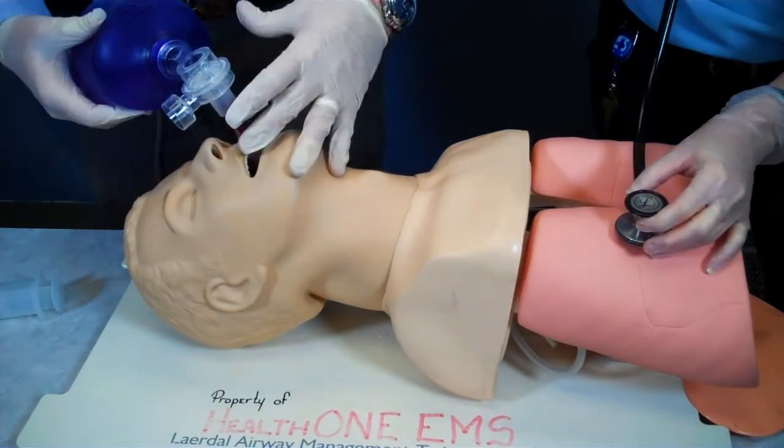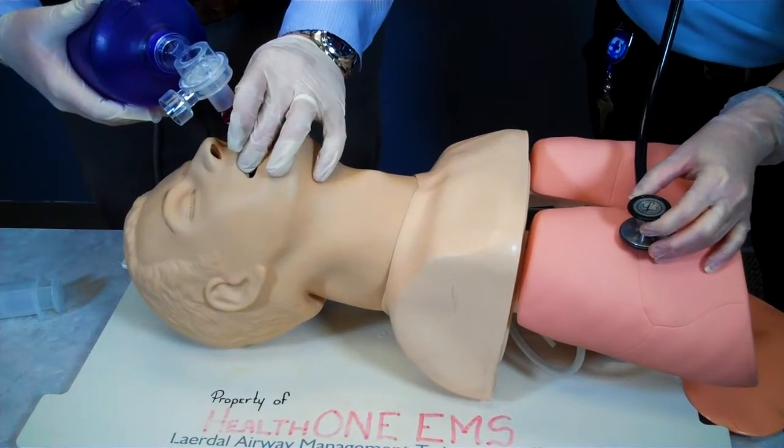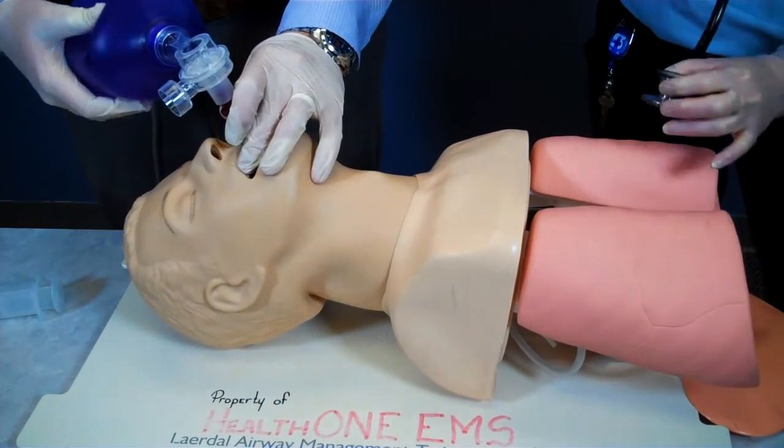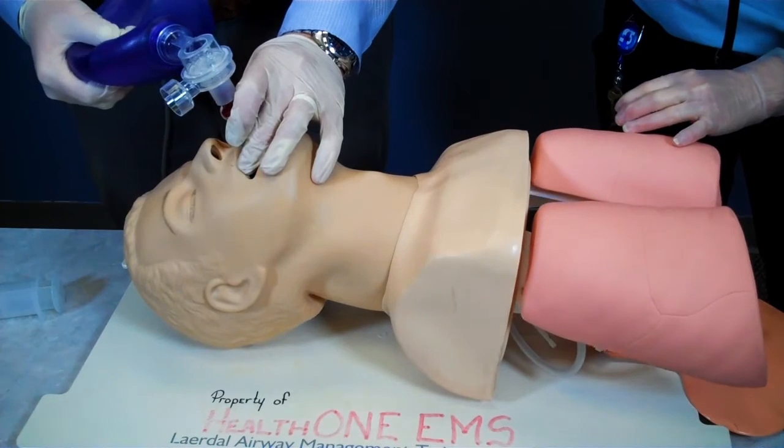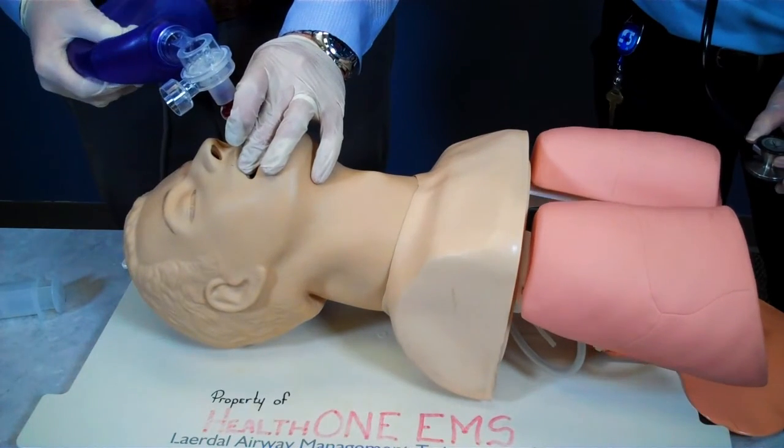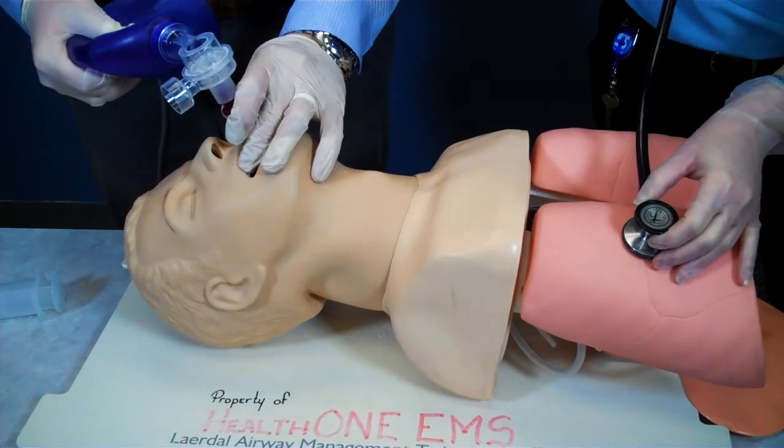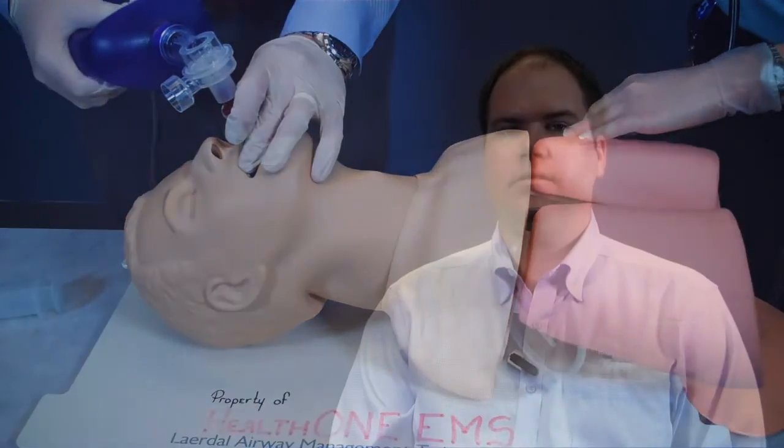I now take the BVM from my assistant and attach it to the end of the airway. I ventilate the patient with enough volume to see chest rise. I confirm placement of the airway by auscultation over the epigastrum and the presence of bilateral lung sounds.